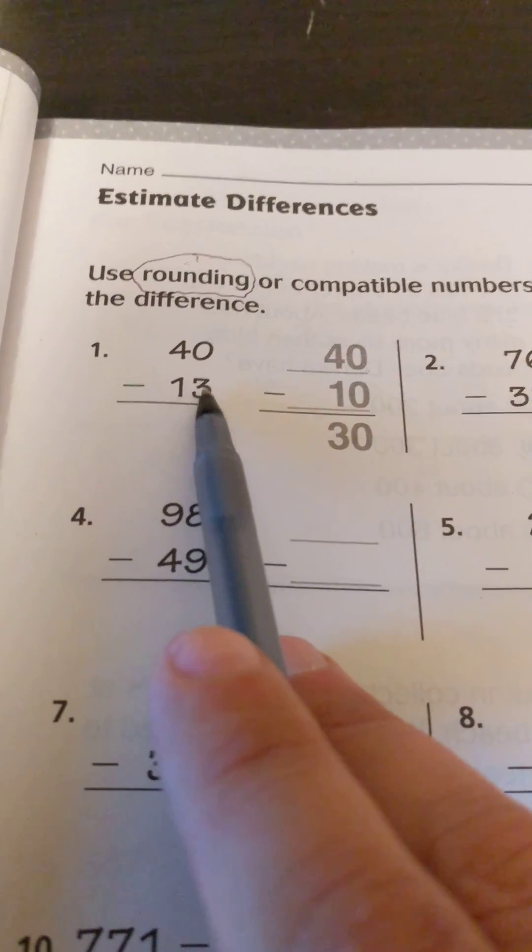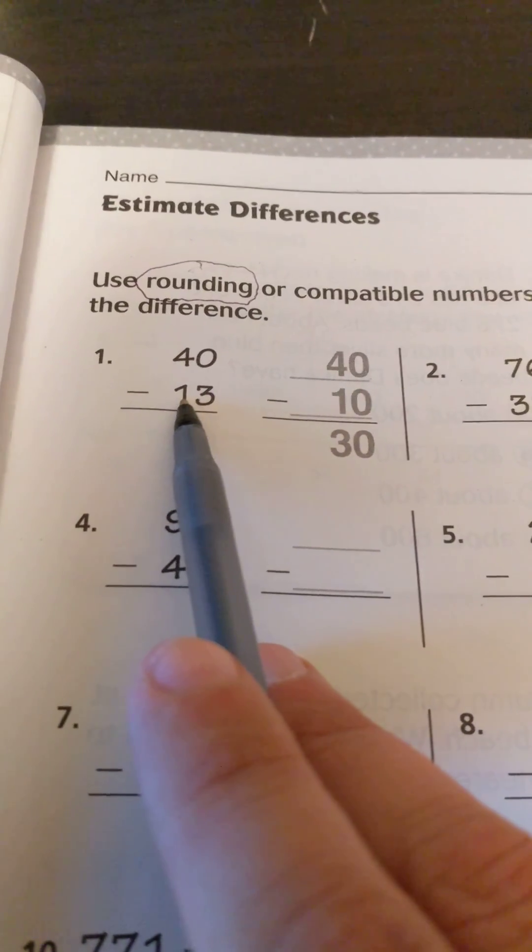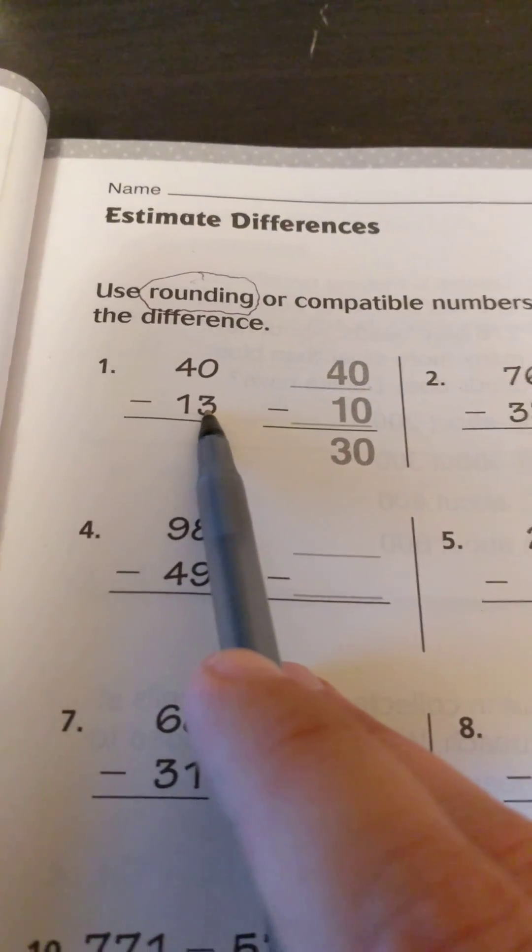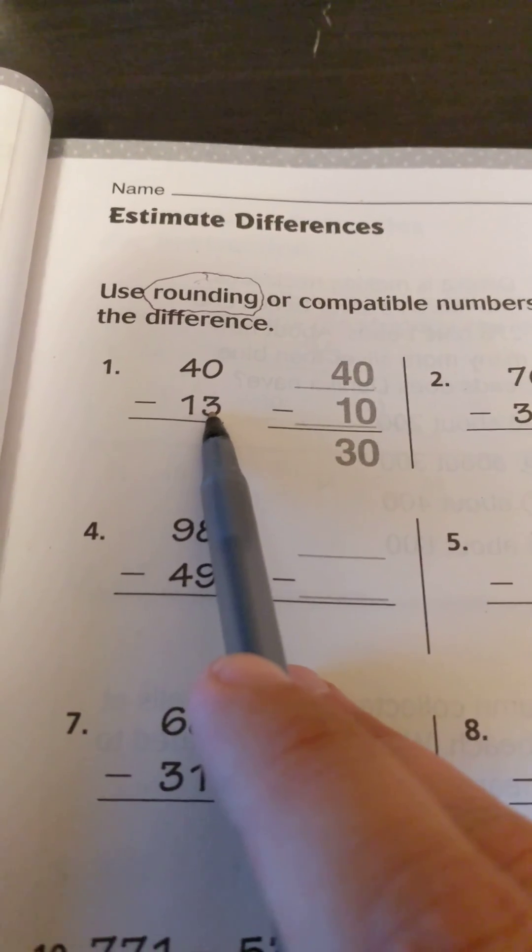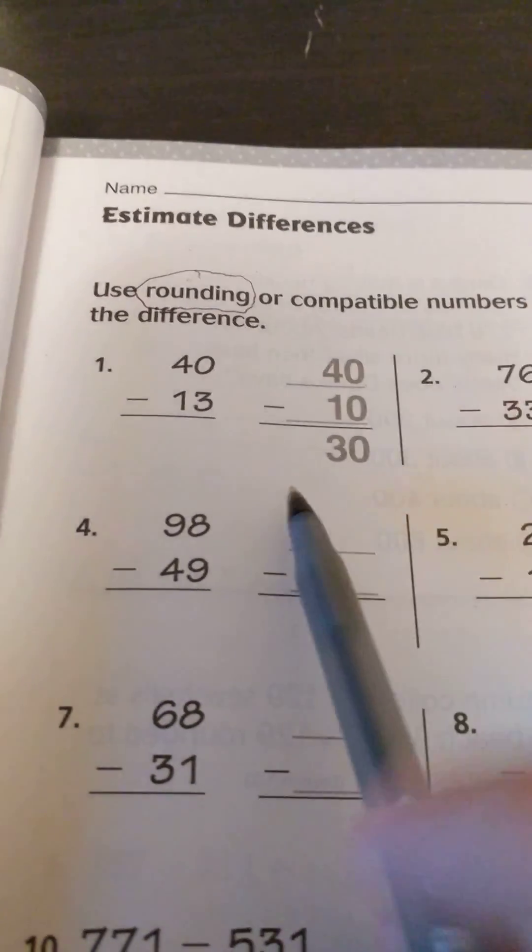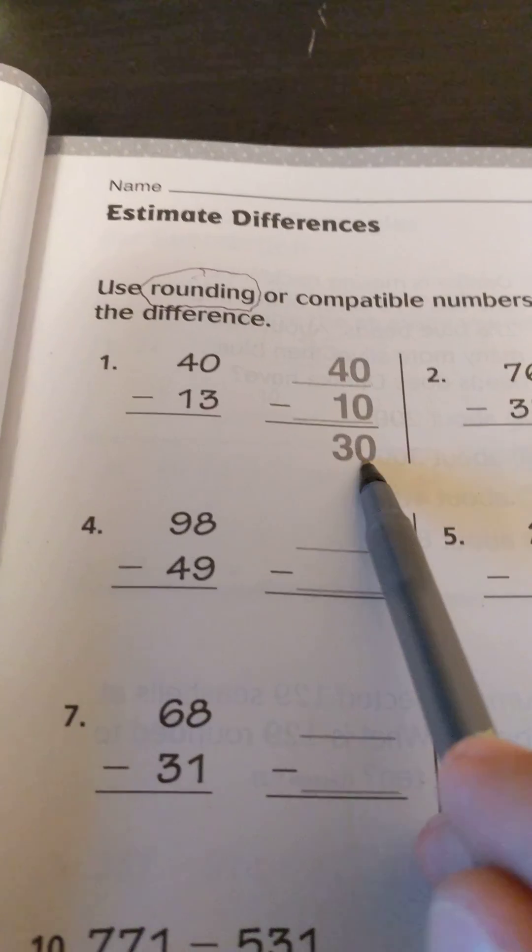And this number here, 13, if you're rounding to the nearest ten, you look at the next door neighbor. So we're looking at the ones place - there's less than five ones, so this number will be 10. So 40 minus 10 equals 30.